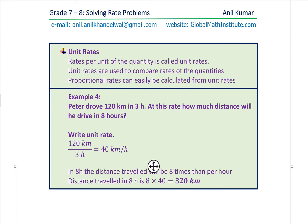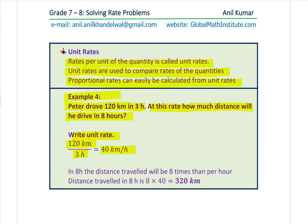Here is a distance, time, speed example. Rates per unit of a quantity is called unit rates. Unit rates are used to compare rates of quantities. Proportional rates can easily be calculated from unit rates. Example 4: Peter drove 120 kilometers in 3 hours. At this rate, how much distance will he drive in 8 hours? Let's find the unit rate: 120 divided by 3 hours gives 40 kilometers per hour. In 8 hours it will be 8 times 40, which is 320 kilometers.